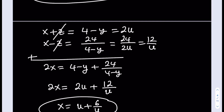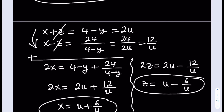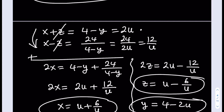I can do the same for z. Subtracting the two equations eliminates x and gives 2z equals 2u minus 12 over u. Dividing by 2 gives z equals u minus 6 over u. And from the assumption x plus y plus z equals 4, I can easily solve for y: y equals 4 minus 2u. Now I'm able to represent each variable x, y, and z in terms of a single variable u.